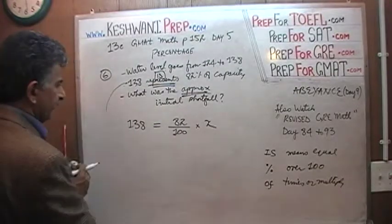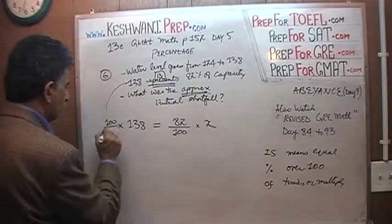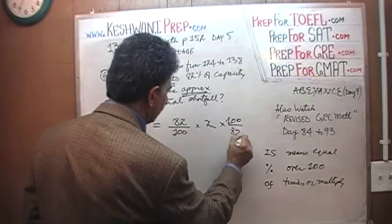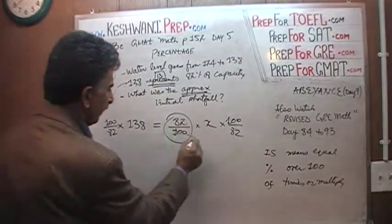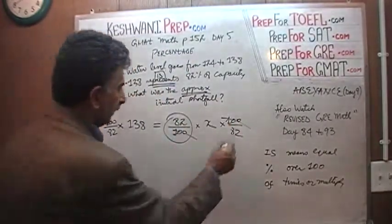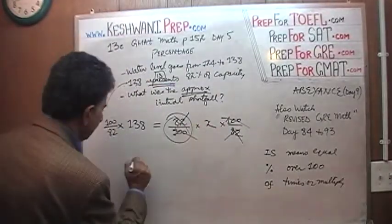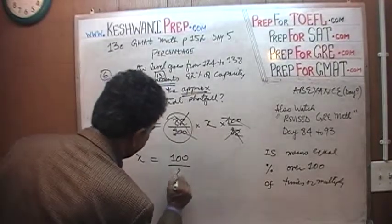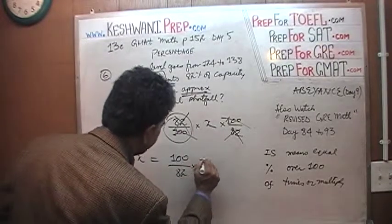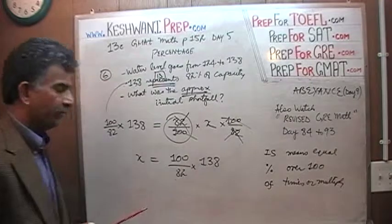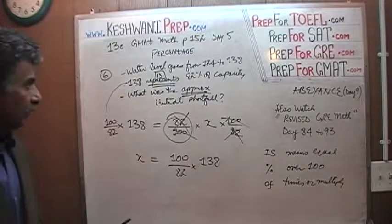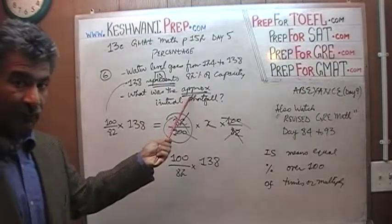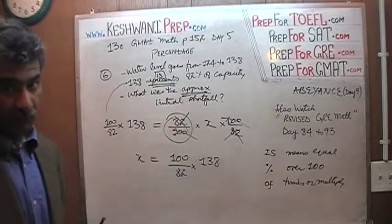Let's multiply both sides of the equation by 100 over 82. In other words, the reciprocal of this guy, so we can pass out this 100 with that 100. This 82 goes out with that 82. And x equals 100 over 82 times 138. Now this is where the prickly bit is going to come in. This is where the fact that they are asking for the approximate value, not the exact value, is going to come into play.